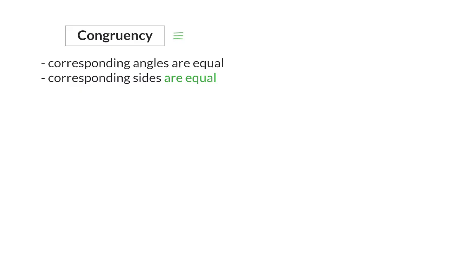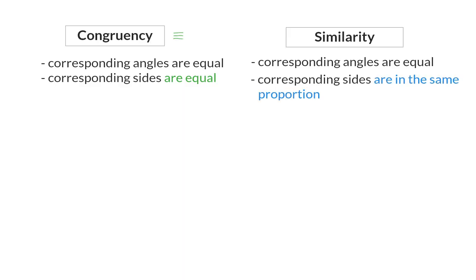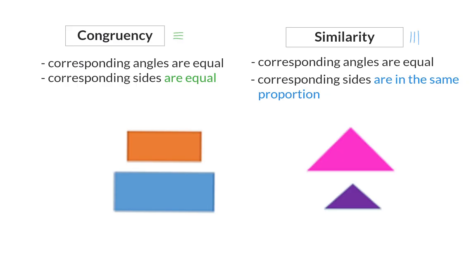For similarity, the corresponding angles are also equal, but for the corresponding sides, they are only in the same proportion. This means that one shape is an enlargement or reduction of the other one.